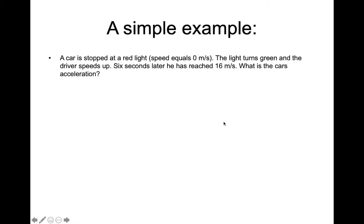Let's take a look at a simple example and try to get a feel for an acceleration problem. I want you to imagine that a car is stopped at a red light, meaning the speed equals zero meters per second. That's its initial speed. The light turns green and the driver speeds up. Six seconds later, he has reached 16 meters per second. That word later should be a trigger to indicate that this is the final speed of the car. And it took six seconds for that to happen. That's the time required. That will be your delta T. What is the car's acceleration?